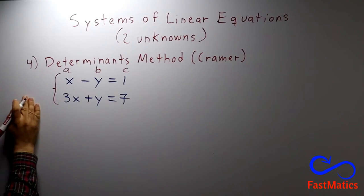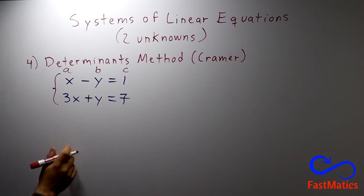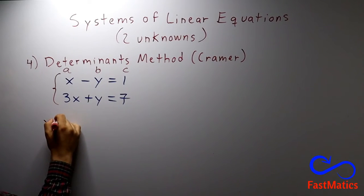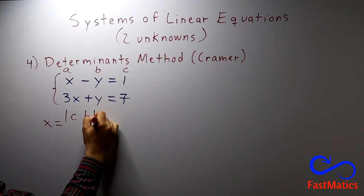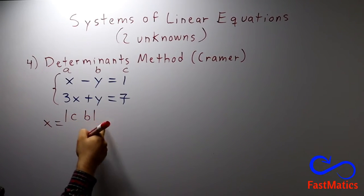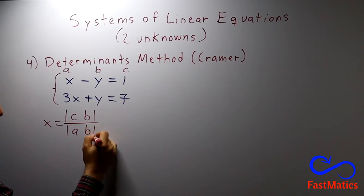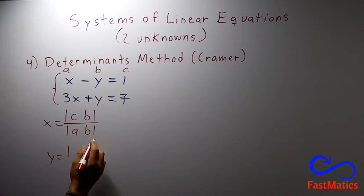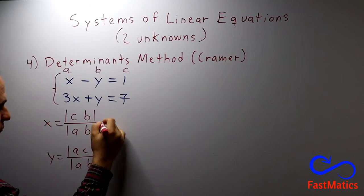Now I'm not going to write all the steps because it is very simple. You are going to follow two simple formulas. x is equal to the determinant of Cb divided by the determinant of Ab. And y will be equal to the determinant of Ac divided by the determinant of Ab. Very simple formula.